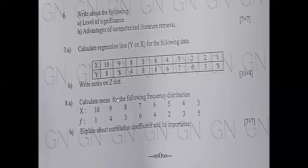Write a note on the Z-test — it is used to determine when two population means are different when the variances are known and the sample is large. That you can write for four marks, very simple. Then calculate the mean for the following frequency distribution — very familiar: 10×1, 9×4=36 and so on, using the Xi, fi, and formula to get the value. Also explain correlation coefficient — also known as Pearson's correlation coefficient — it measures linear correlation between two sets of data, and describe its importance and uses.